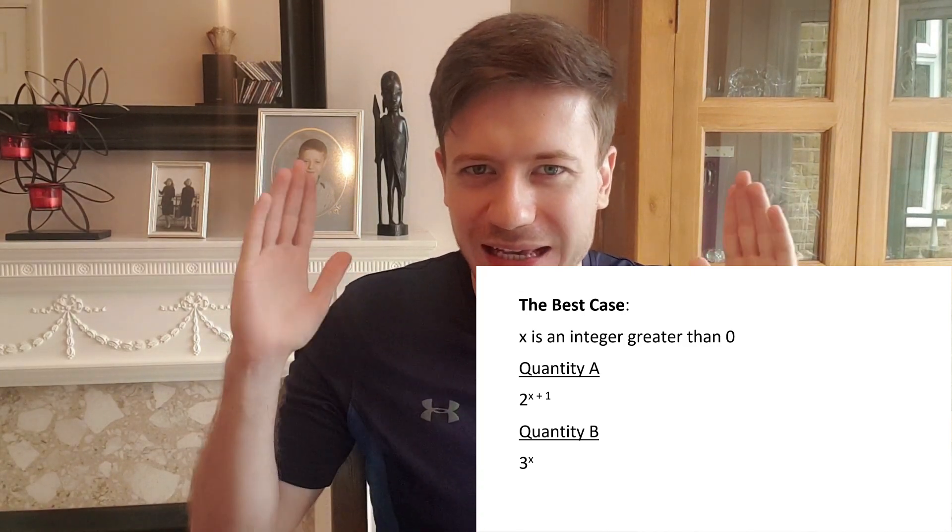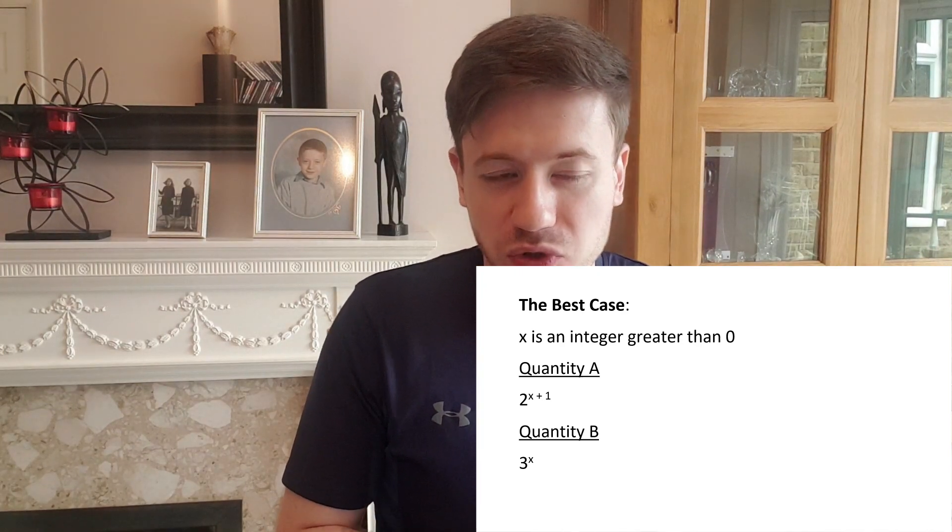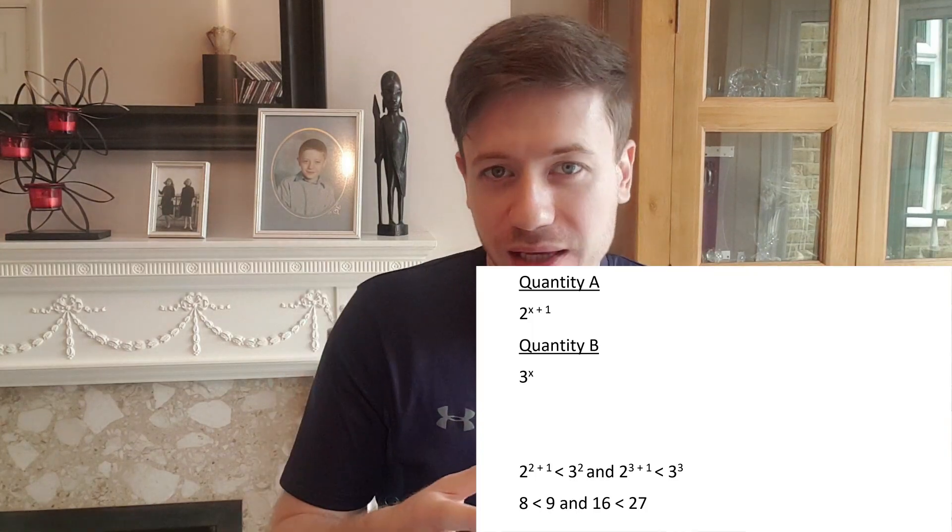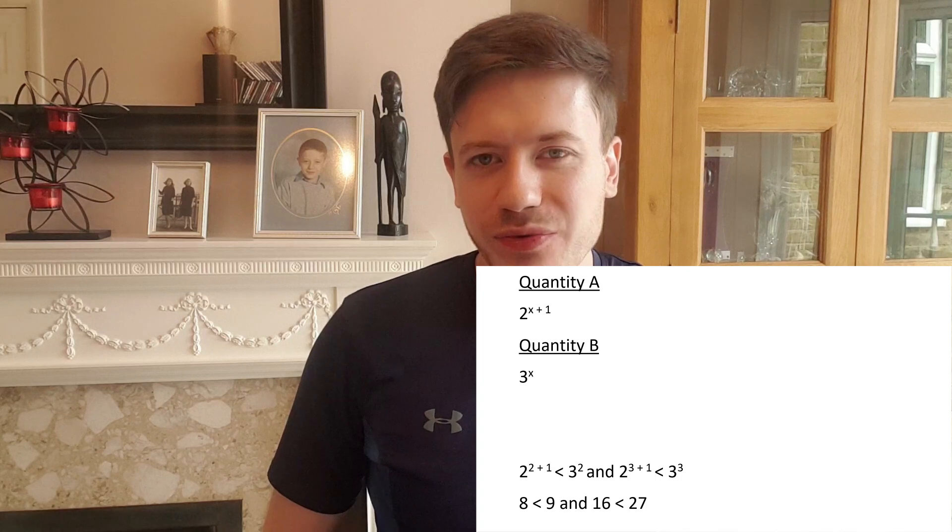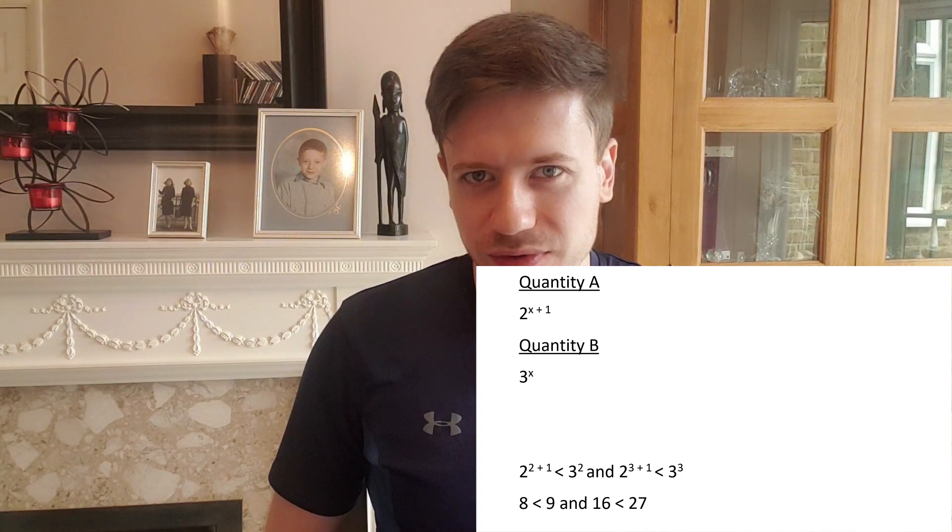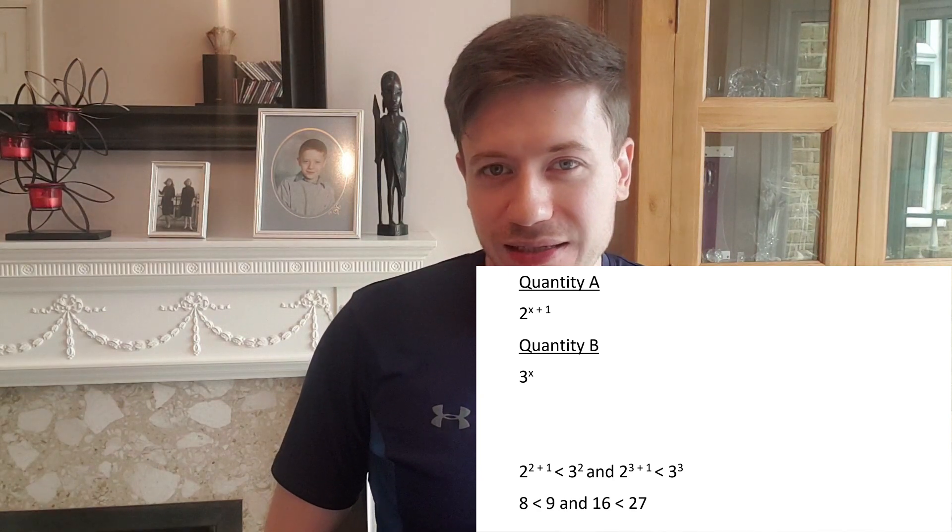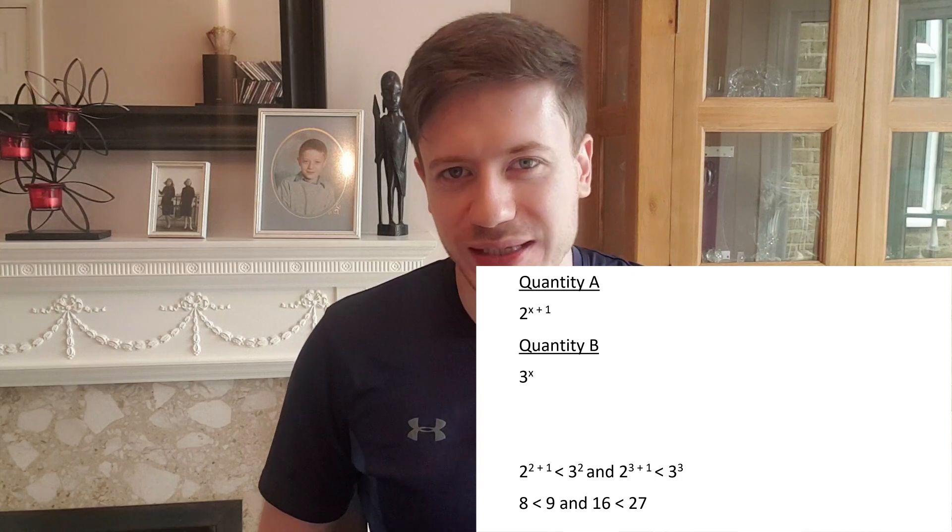The answer is pick extremes. For example it would be a bad idea in this example just to pick two random integers like 2 and 3 and throw them in and make a conclusion based off that. As you can see on screen if we replace x with a 2 we get 8 is less than 9. And if we replace x with a 3 we get 16 is less than 27.